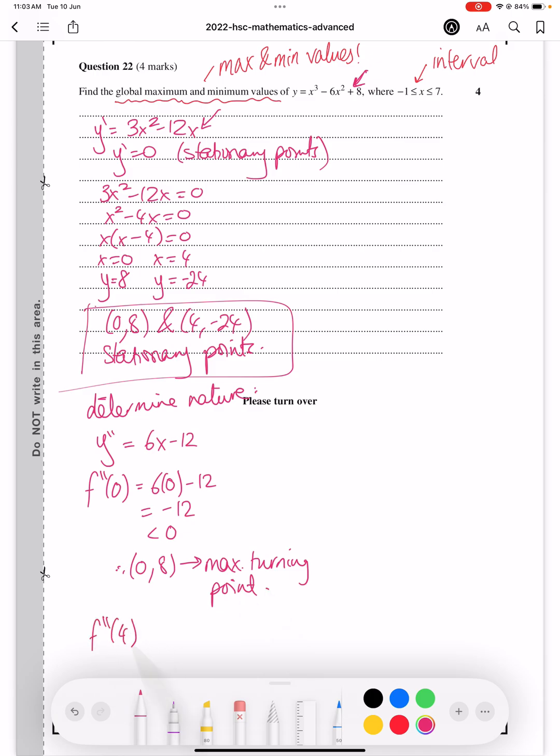Find f double dash of 4, and that gives us 6 times 4 minus 12. That is 12. That is greater than 0. So therefore, (4, -24) is a minimum turning point.